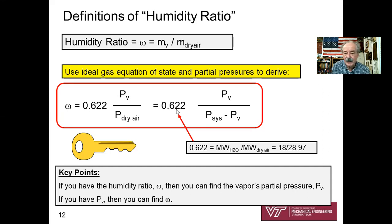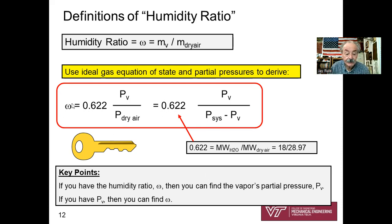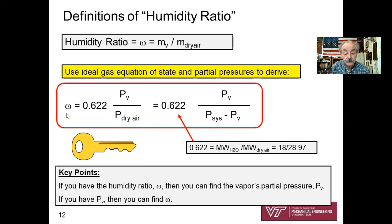The key point: if you have the humidity ratio numerically and you know the system pressure (which you always do), then you can find the vapor's partial pressure P-sub-V. Conversely, if you have P-sub-V and the system pressure, you can back-calculate the humidity ratio omega. It works both ways, and your mastery of this will help in your analysis.